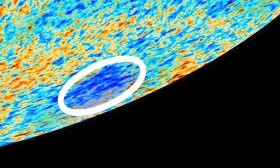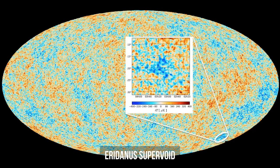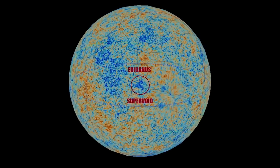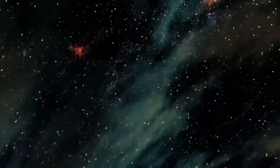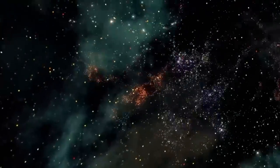For example, the largest of them, the Eridonis supervoid, basically occupies about 11% of the observable universe. Do you know how scientists explain the existence of galaxies and voids?